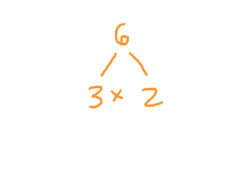Here I'm showing you a factor tree for 6. We started off with the number 6 and we thought of a multiplication fact that could equal 6. For instance, 3 times 2 does equal 6. We actually could have had a different looking factor tree if we had chosen 2 times 3.